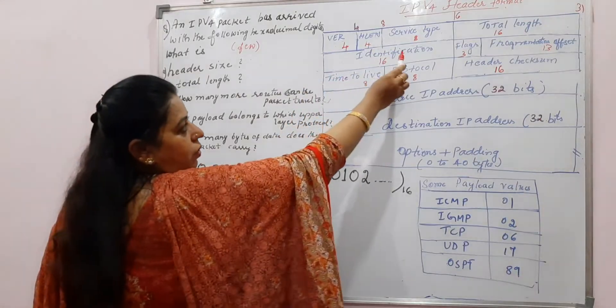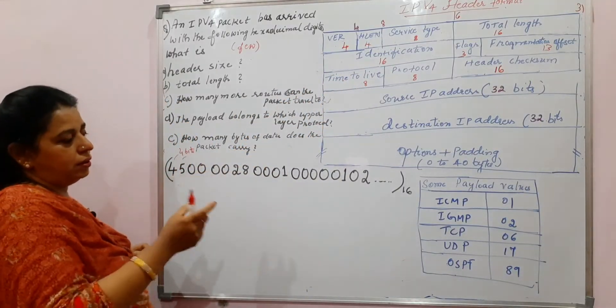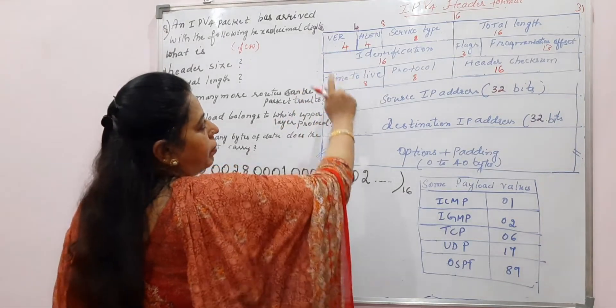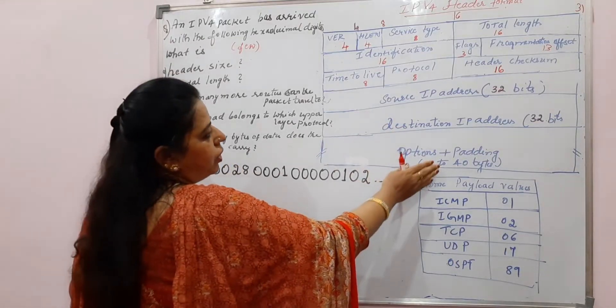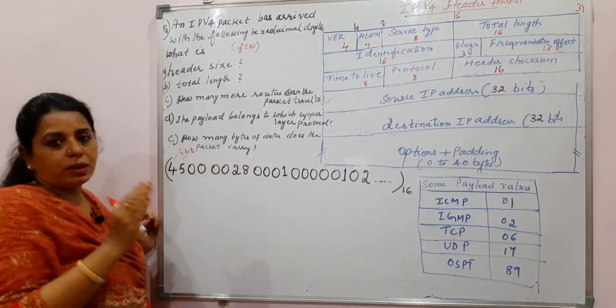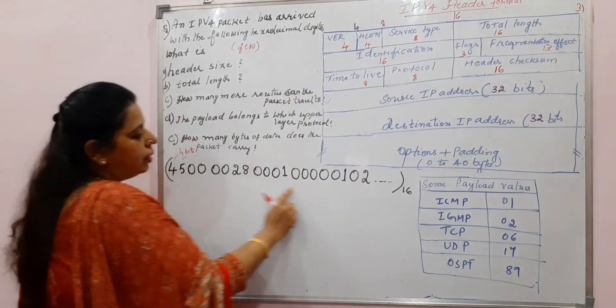Here also we are writing totally in bits only the complete header format, the number of bits that are meant are in binary. We are writing how many bits are meant here. Totally completely leaving the options and padding, there are 160 bits and 20 bytes. Out of that, these are the numbers that are mentioned.